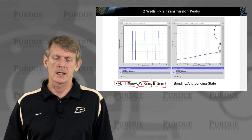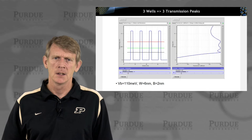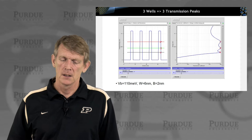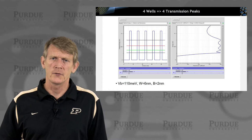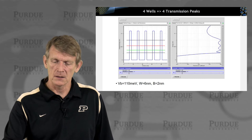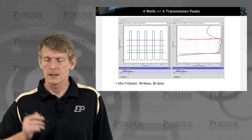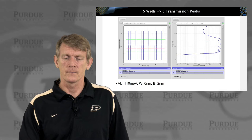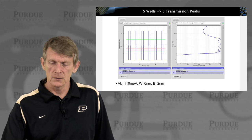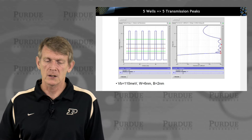Adding another barrier gives us three wells and three transmission peaks. Adding a fourth well gives four transmission peaks, and what I'm seeing is a transmission that starts to resemble a square — if you're an electrical engineer familiar with band pass filters, that might look familiar. Adding one more barrier for five wells gives five peaks.